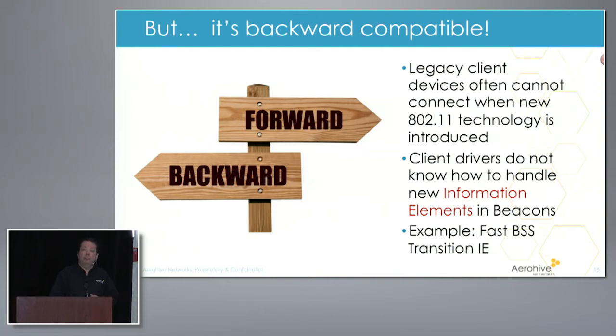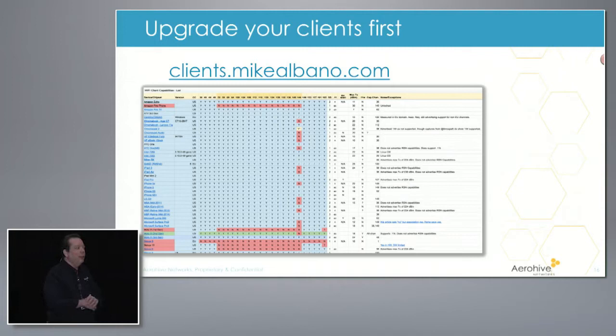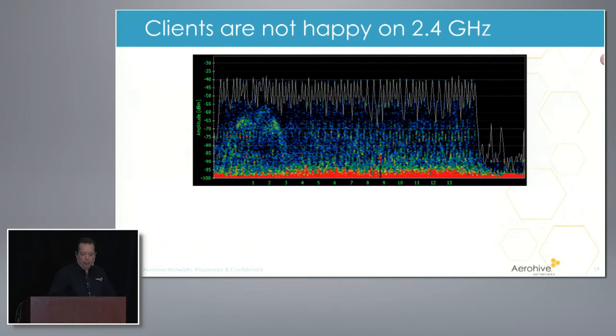There's always been a problem — people ask if there's a list somewhere with all the capabilities of all the clients and what they can do. Mike has a pretty good one — I encourage everybody to help Mike out with this because it's very useful. Obviously there are tens of thousands of other clients, but he's hit a lot of the key ones. So upgrade your clients first. Clients aren't very happy on 2.4 GHz. It's a disaster zone — there are only three usable channels, it's impossible to prevent co-channel interference, high SNR oversaturation of 802.11 devices, and lots of non-802.11 interference.